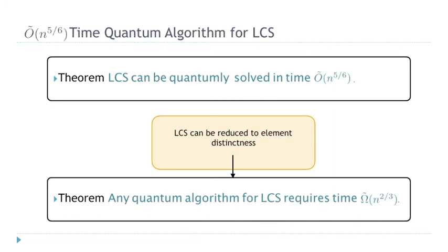The combination of these ideas gives us a solution that runs in time n^(5/6), solves LCS, and does it with high probability. There is also a trivial lower bound that directly follows from element distinctness: we can think of LCS as a strict generalization of element distinctness. If the LCS value is zero, the two sequences share nothing; if it is at least one, they share something. So LCS solves element distinctness, meaning the lower bound for element distinctness carries over to LCS — LCS requires time n^(2/3).